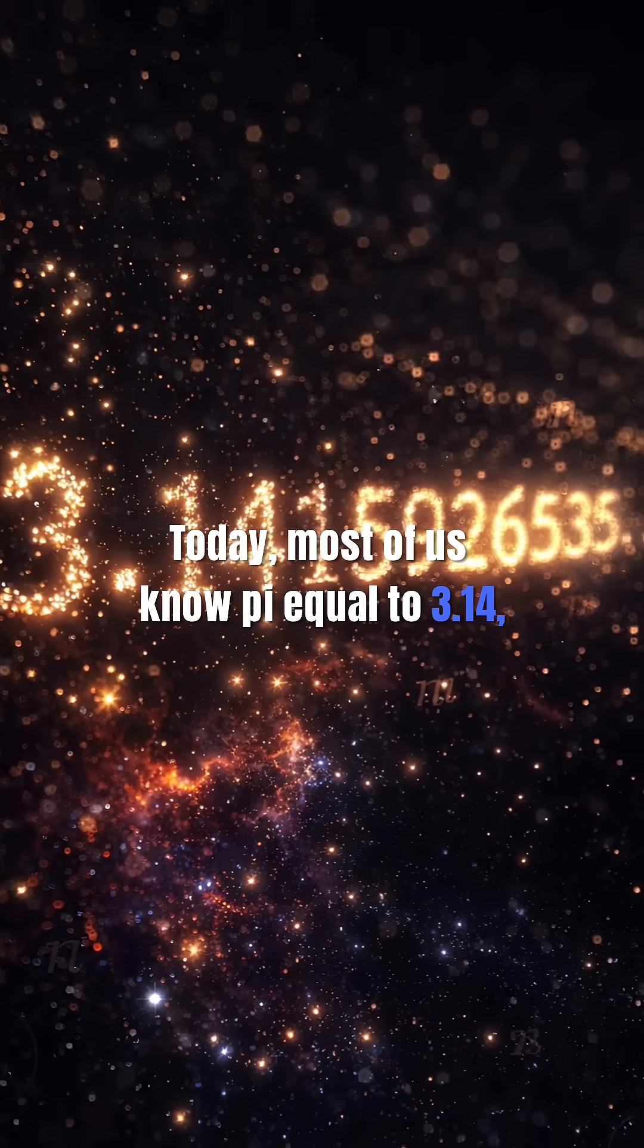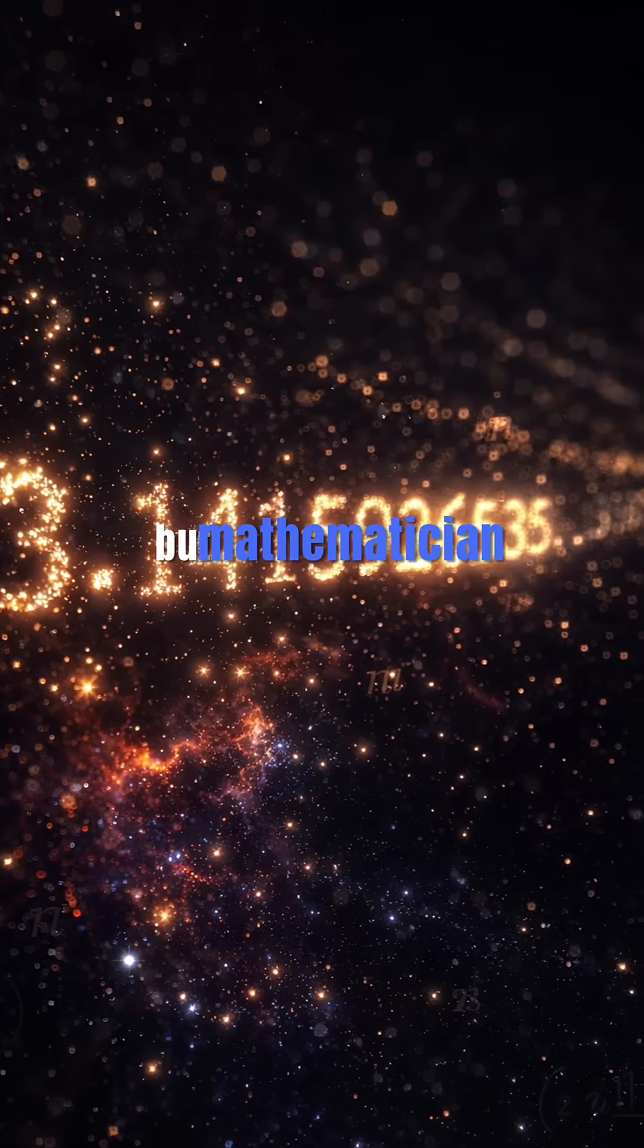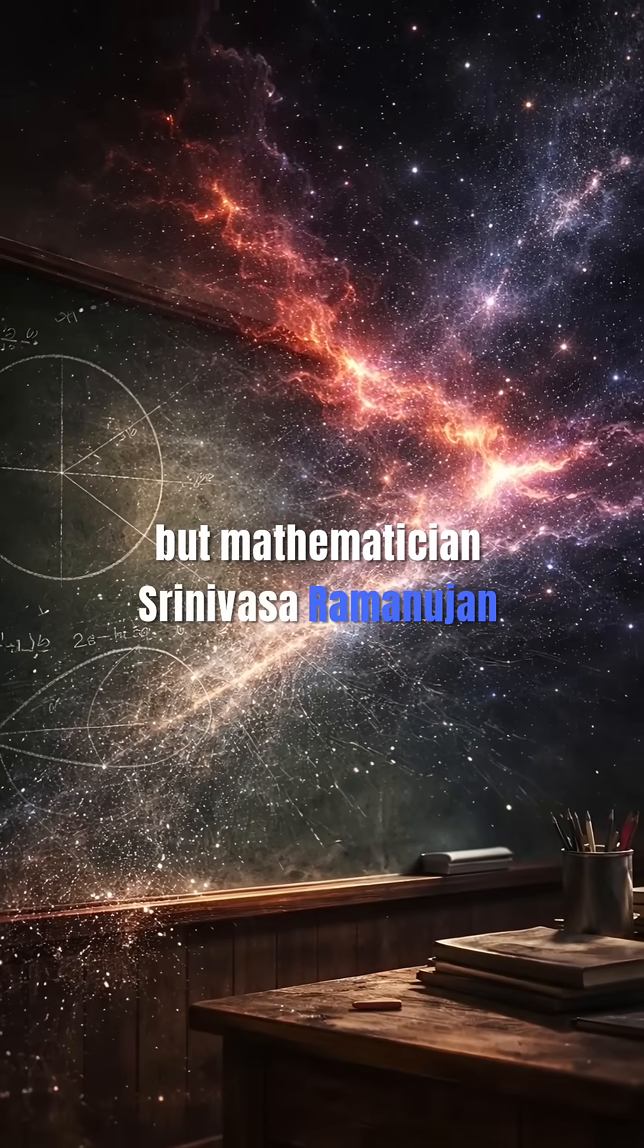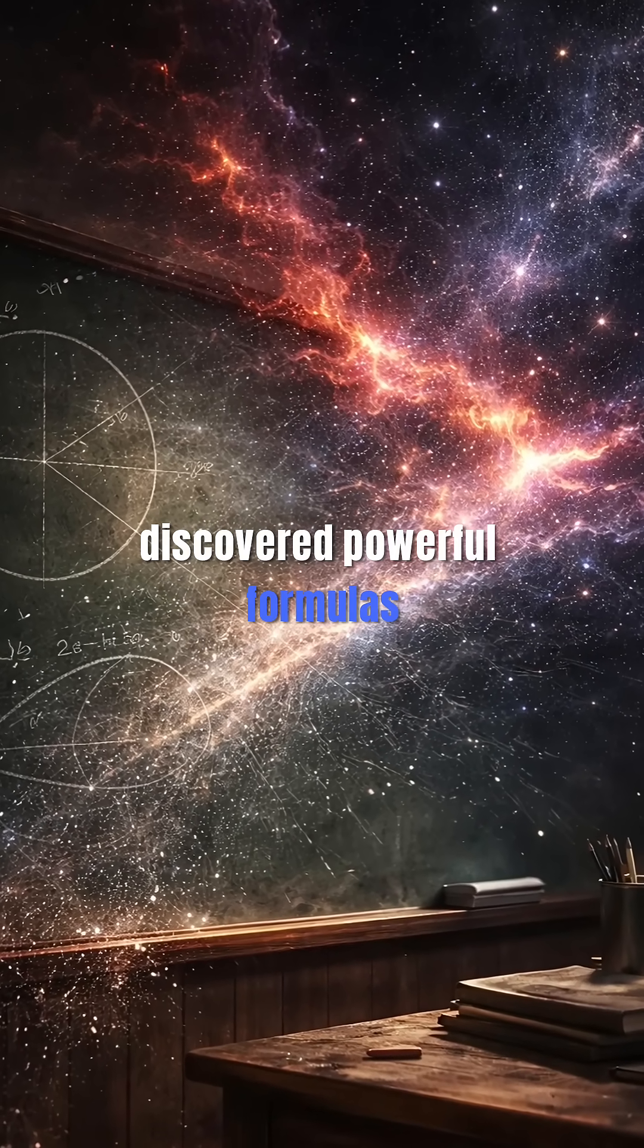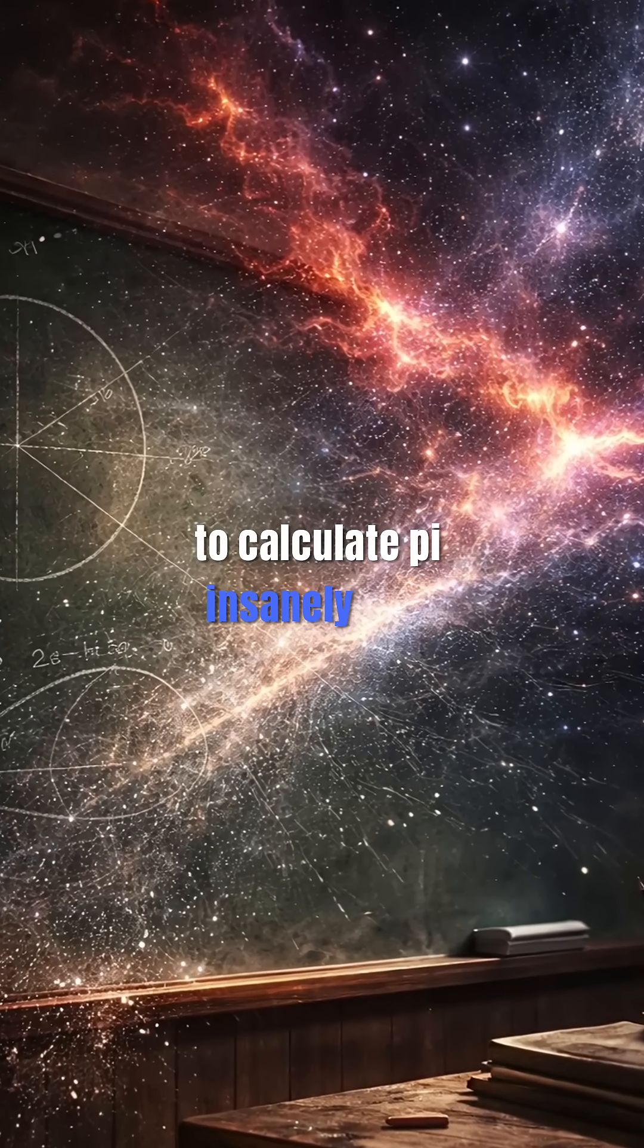Most of us know pi equals 3.14. But mathematician Srinivasa Ramanujan discovered powerful formulas to calculate pi insanely fast.